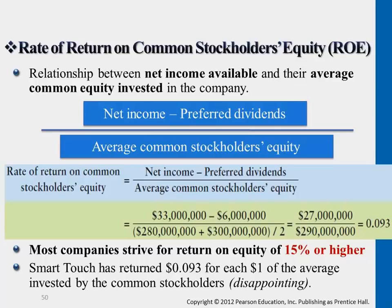The denominator is average common stockholders' equity. Again, you see the term 'average' — so you would take the beginning balance, meaning last year's ending common stock equity, and then this year's ending common stock equity amount, add them together, and divide by 2.